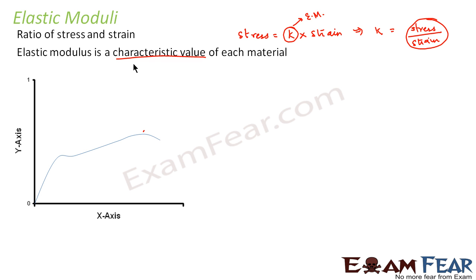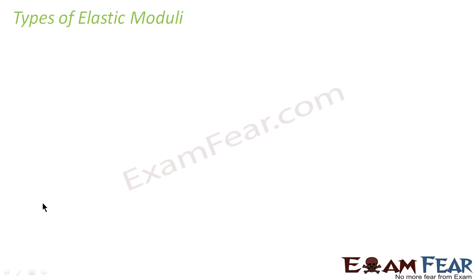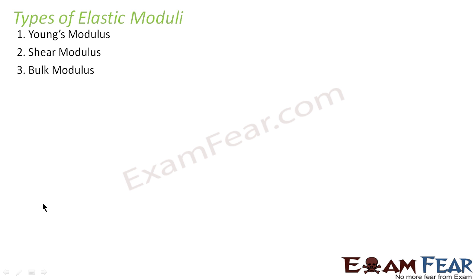If we look at this graph, we can see that elastic modulus is stress by strain. In the region where Hooke's law is obeyed, the slope of the straight line is the elastic modulus. Now, just as there were three types of stress — longitudinal, tangential or shearing, and volumetric — and three types of strain, there are also three types of elastic modulus: Young's modulus, shear modulus, and bulk modulus.